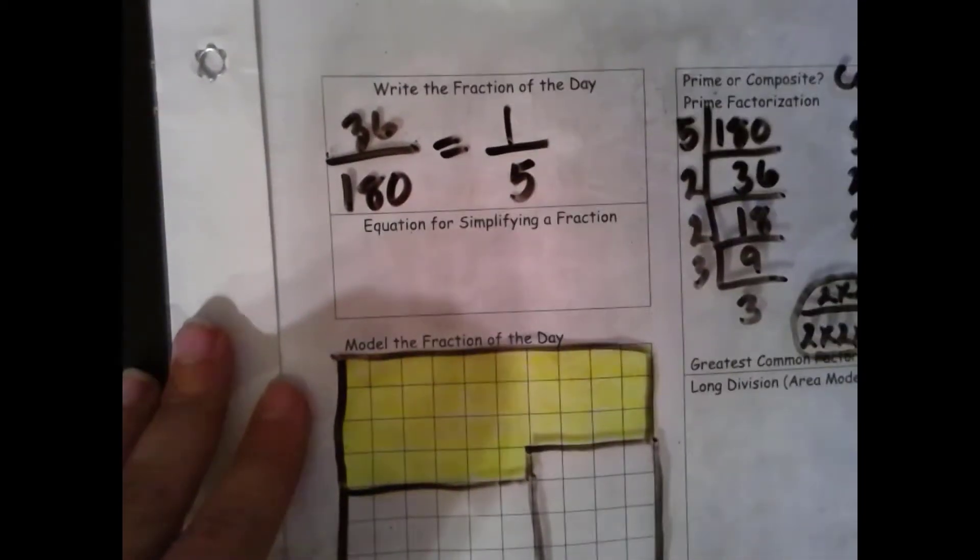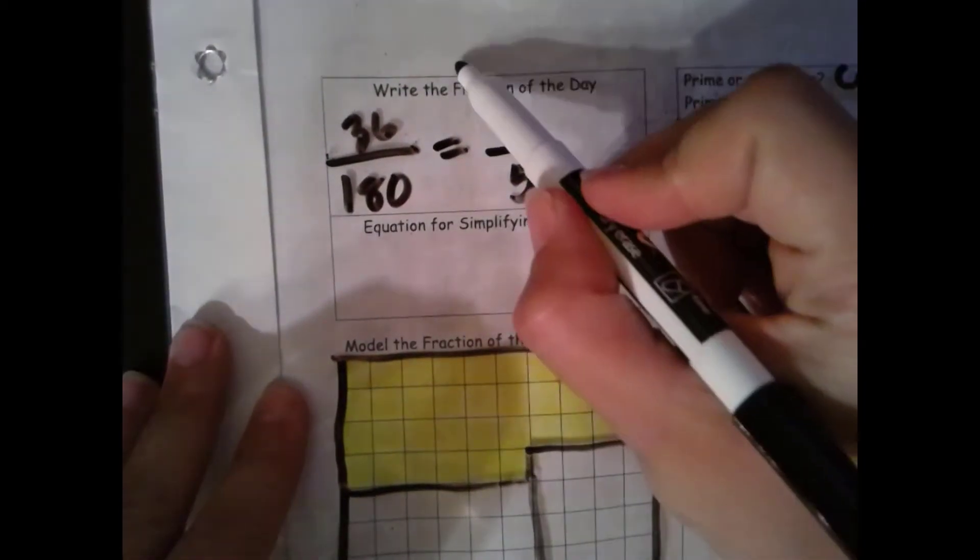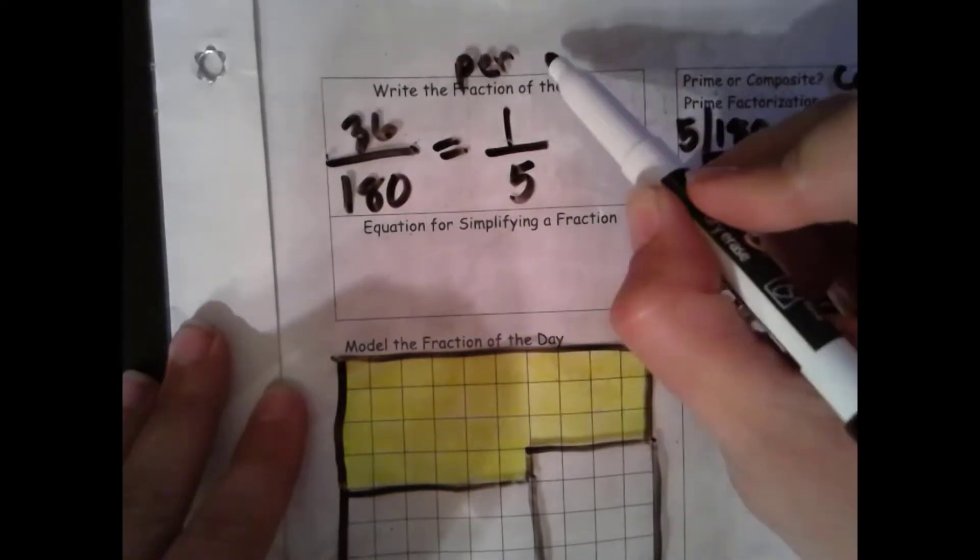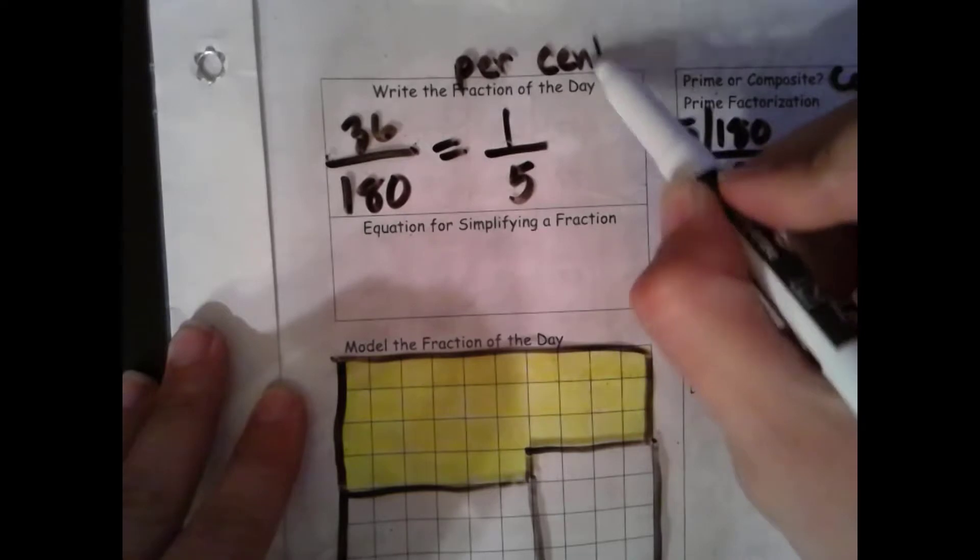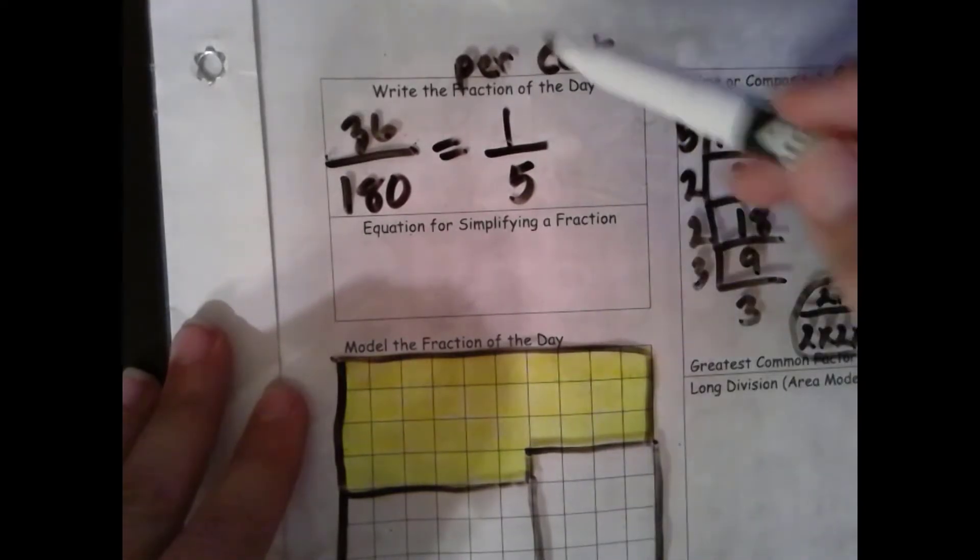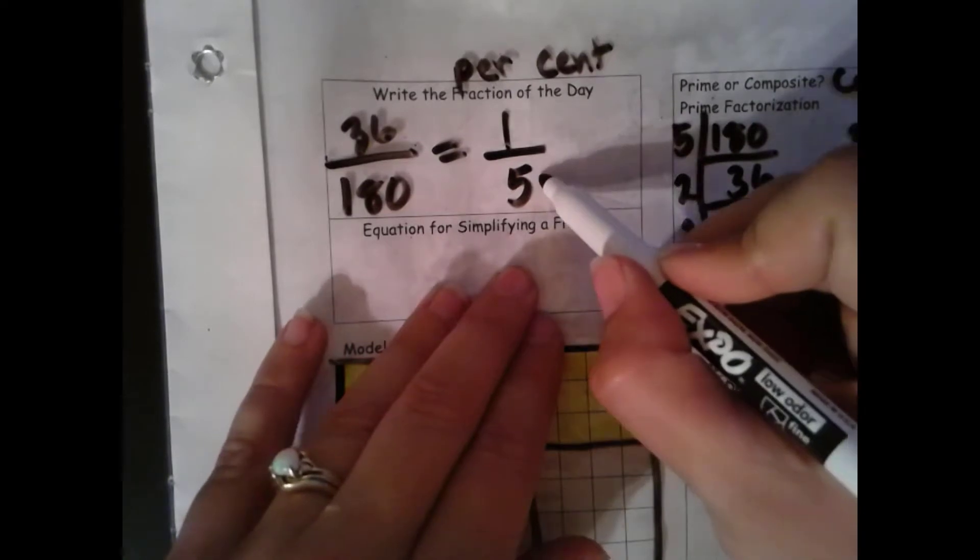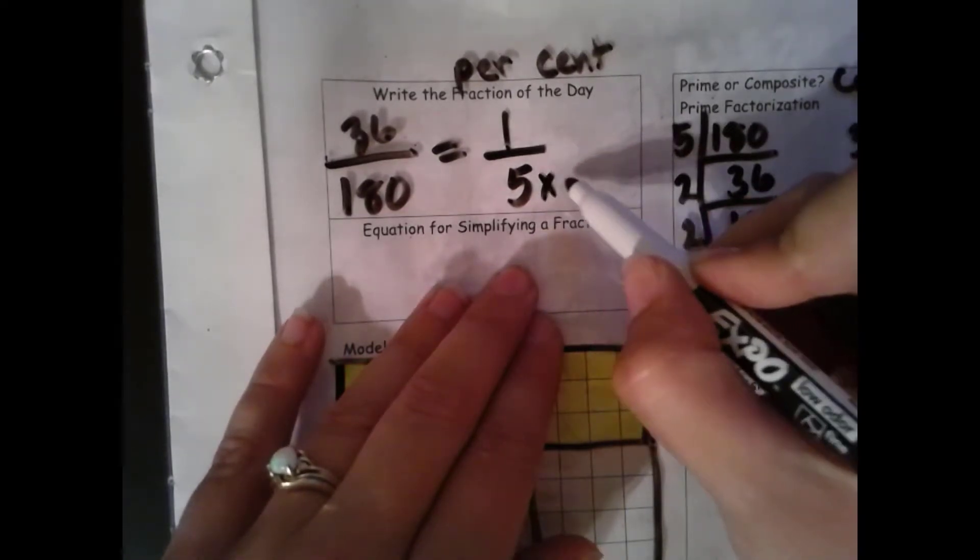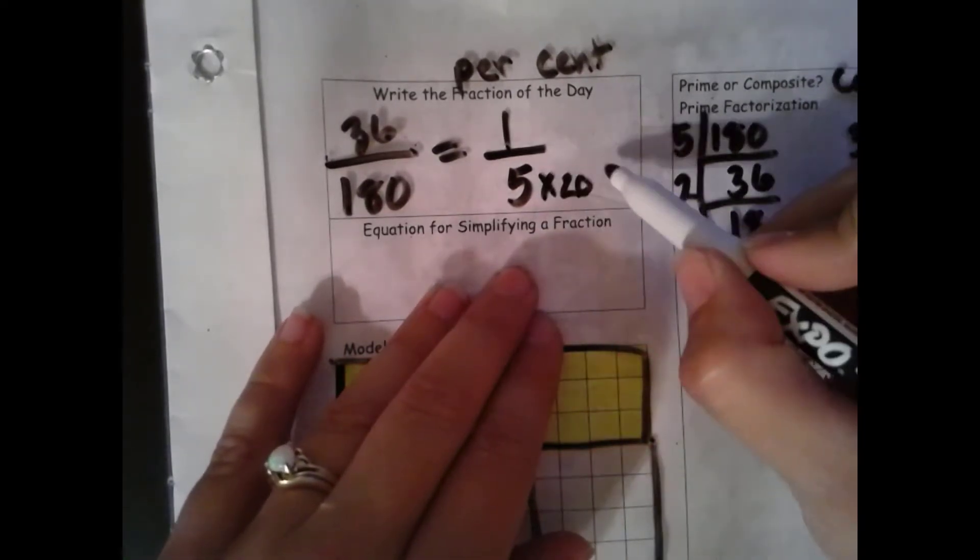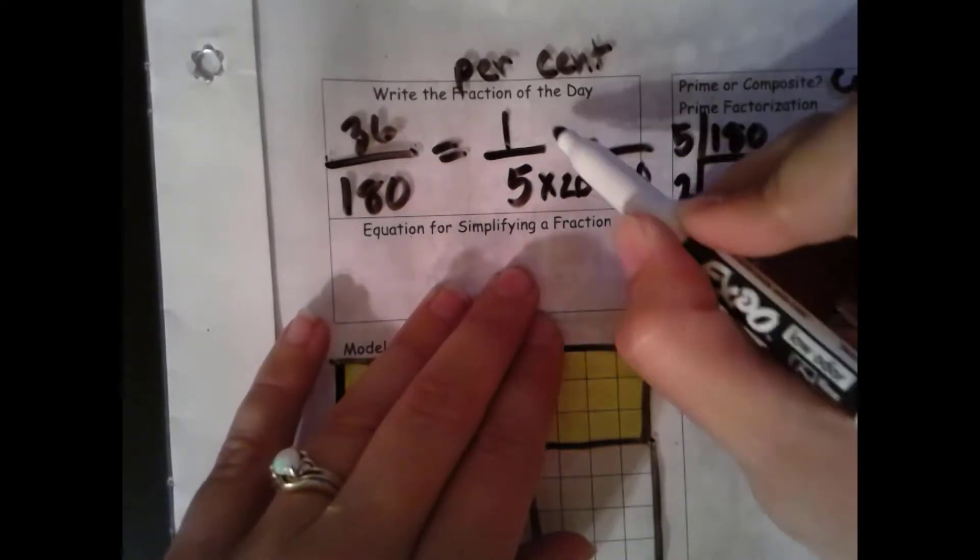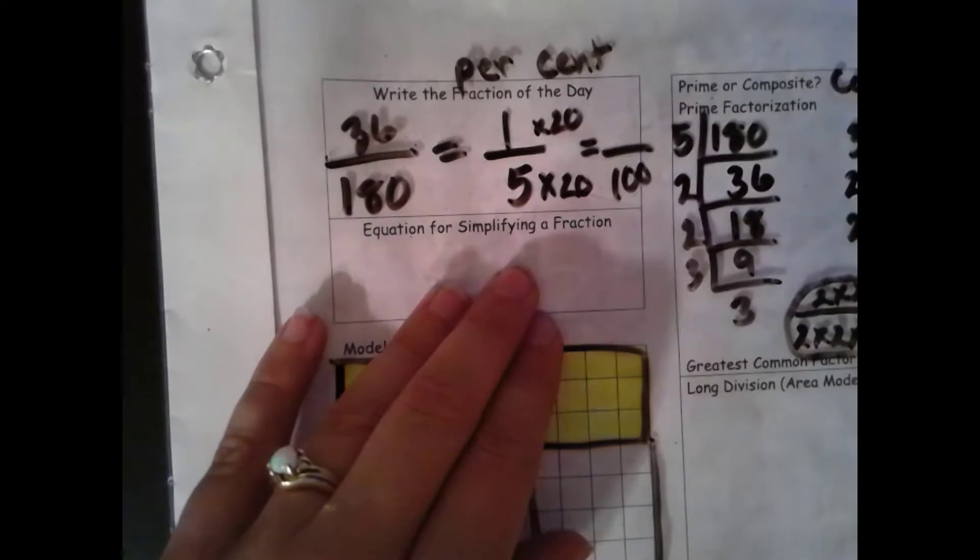Now 5 is one of those numbers that we can turn into 100 pretty easily. So we can find our percent. Per means through or for. Cent means 100. So we need to get through 100. To get 100, I multiply by 20. So that's what I do to the numerator.